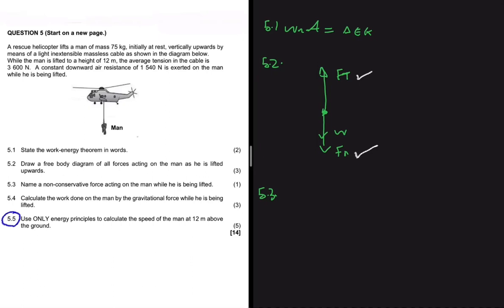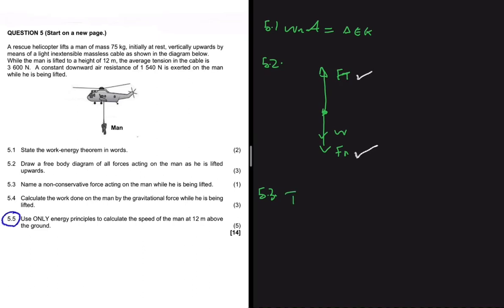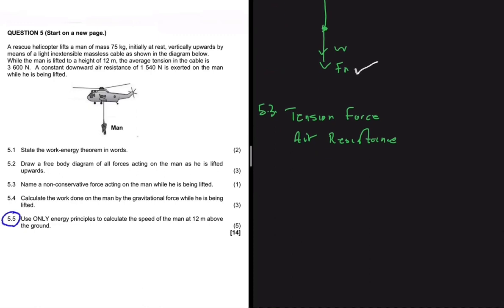Because we know fully well that in our context the only conservative force is gravitational force. So for 5.3, we're going to have the tension force — or the force applied — and then we have air resistance. So that is our answer for 5.3: tension force and air resistance.